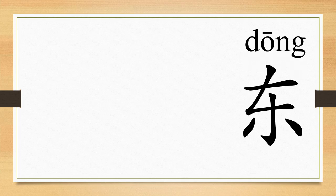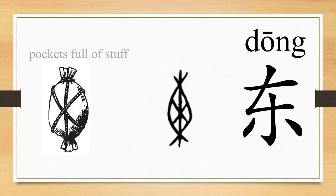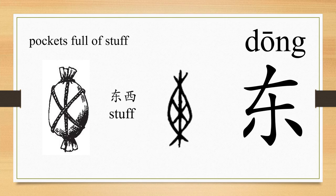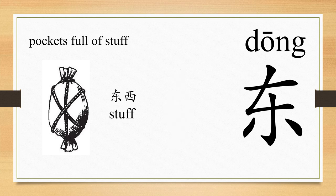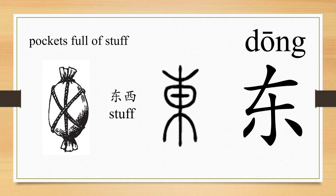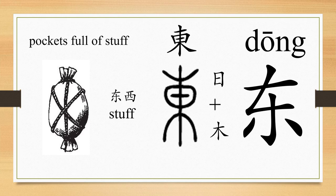The character dong comes from the image of the pocket full of stuff. So dong, the original meaning, is stuff. And nowadays, we still have the word dong xi to indicate stuff. And as the writing changes, the meaning changes too. In this period, dong includes the writing of ri, which indicates sun, and mu, which originally means tree. So some people believe that dong indicates the direction that the sun arises, that is the east. So dong indicates east. And the traditional Chinese character's writing includes ri and mu nowadays. And the Mandarin Chinese character dong is more simplified. So dong means east.